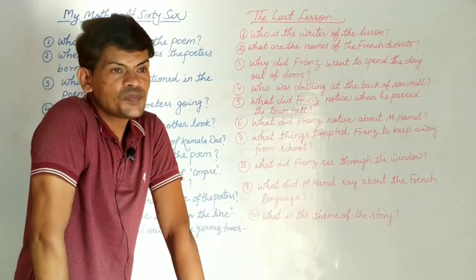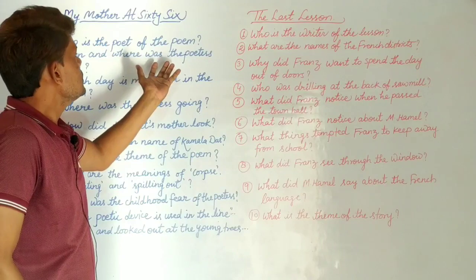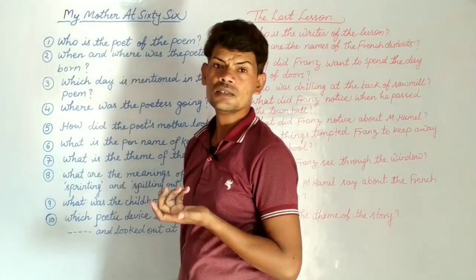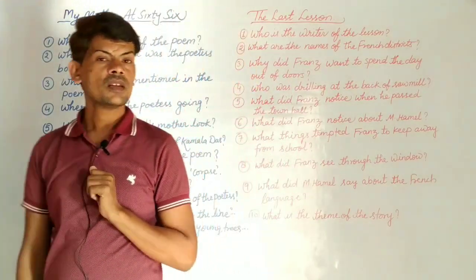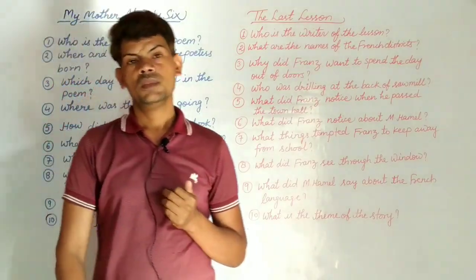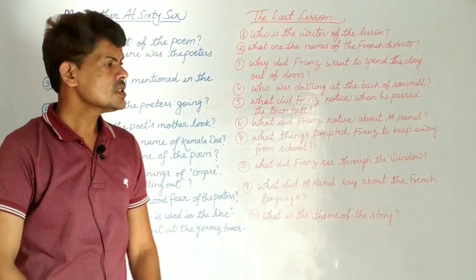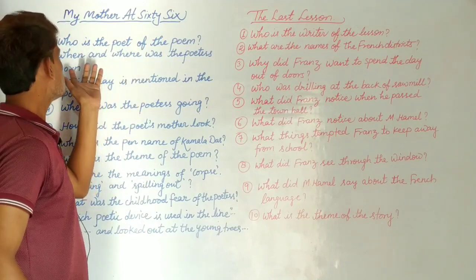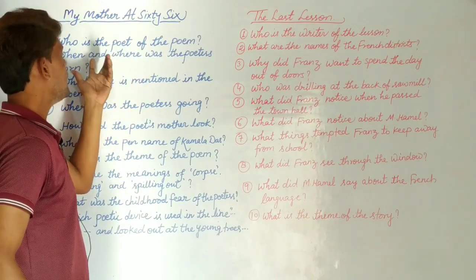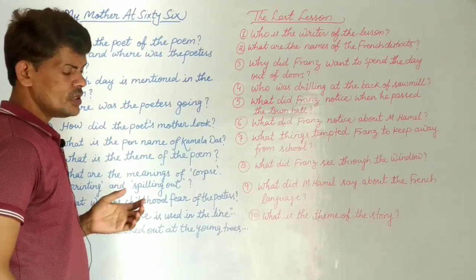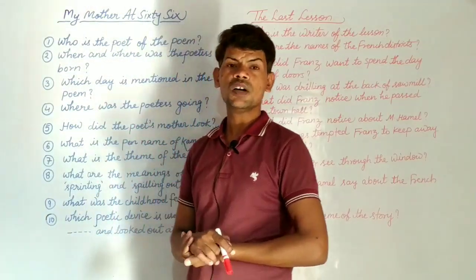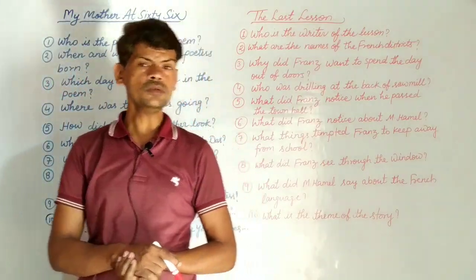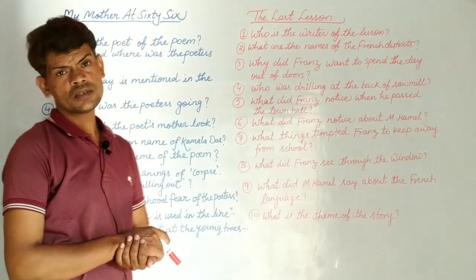Question number 2: When and where was the poetess born? You have to tell me in which year, and where — the place. So you have to write your answers: where the poetess was born and when. This is your second question. Question number 1, the name of the poet. Question number 2, where and when she was born.